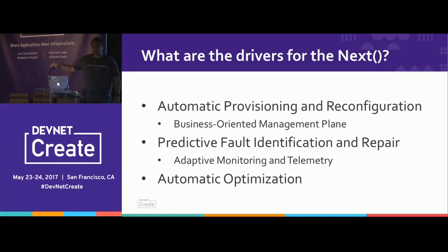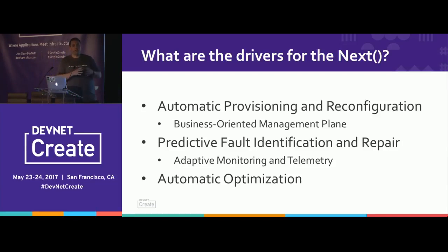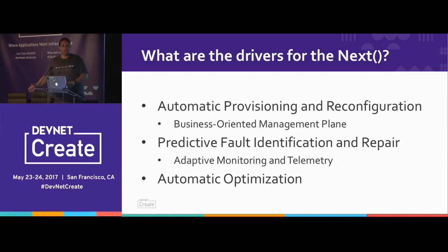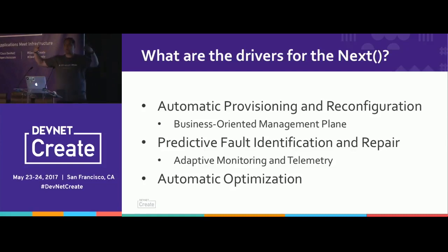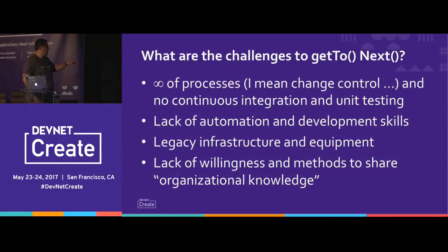We want predictive fault indication and repair. Let's say you have two links and you think you have redundancy, but if you lose one link and don't know about it, you're in a soft fault state — you failed but don't know it, and it will bite you when the second link fails. Graph databases and AI help you understand whether you have a backup. Automatic optimization means you have endpoint A and endpoint B and you want to instantly know what to provision in terms of routing, security, and quality of service — and that can be solved with graph databases.